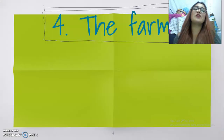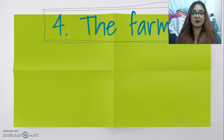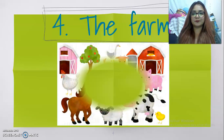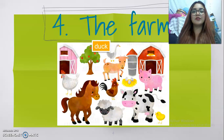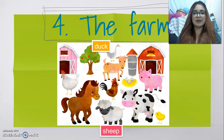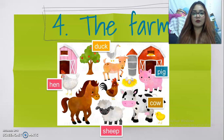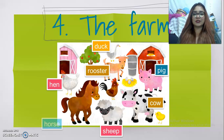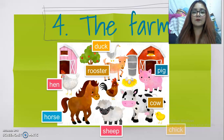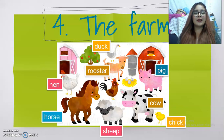Let's have a review about the vocabulary of the farm. Pay attention to the picture. Dog. Sheep. Hen. Goat. Pig. Rooster. Horse. And a chick.